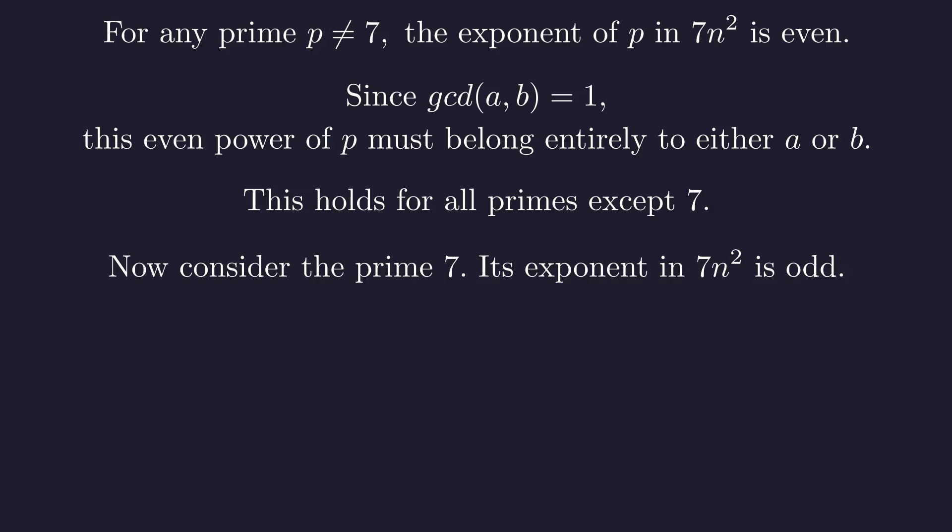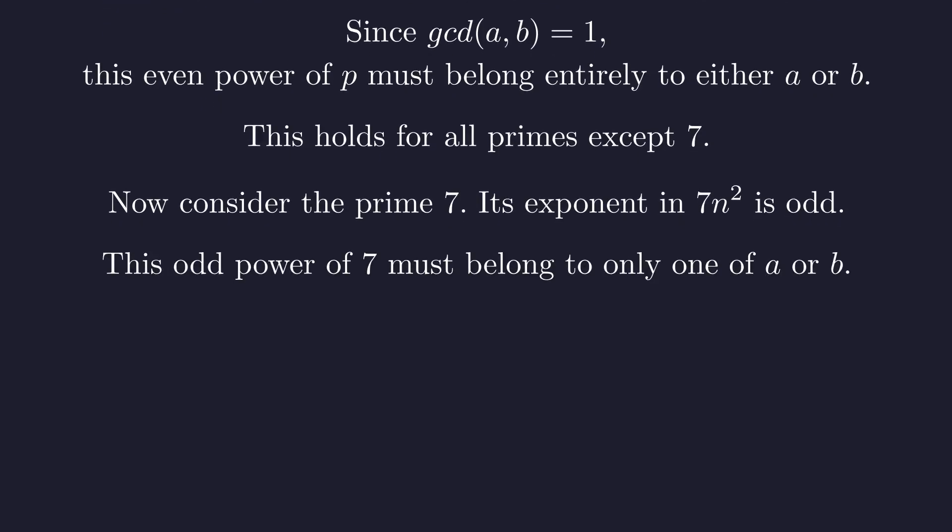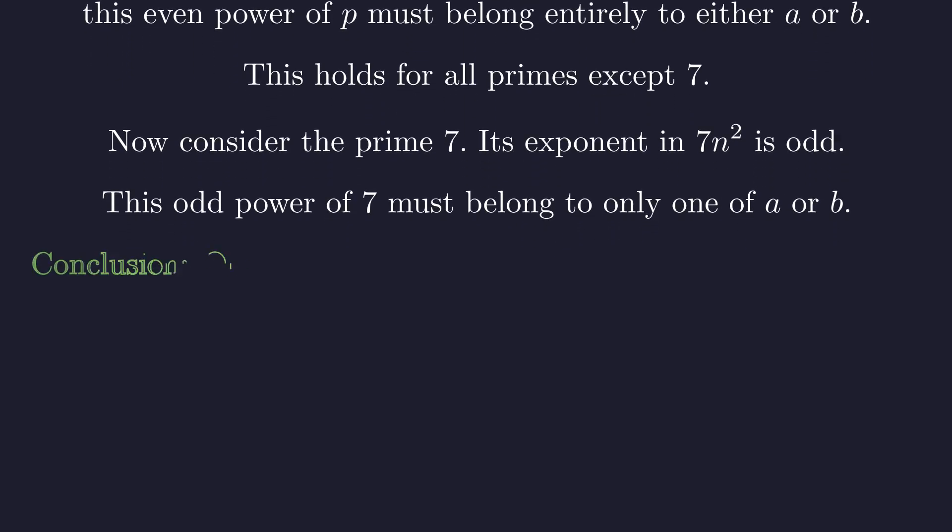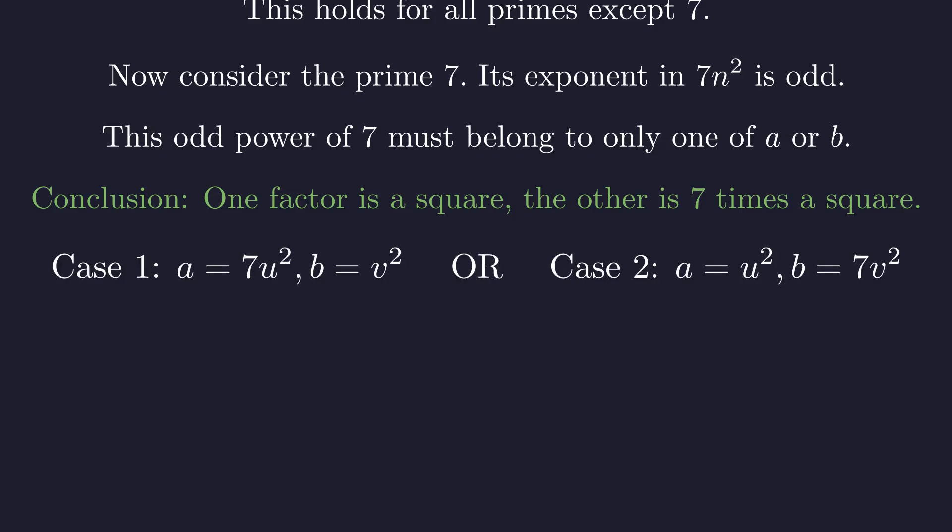Now consider the prime 7. Its exponent in 7n² is odd, at least 1. Again, since a and b are coprime, this entire odd power of 7 must belong to only one of them. This leads to an exhaustive conclusion. One factor must be a perfect square, and the other must be 7 times a perfect square. This gives two mutually exclusive possibilities.